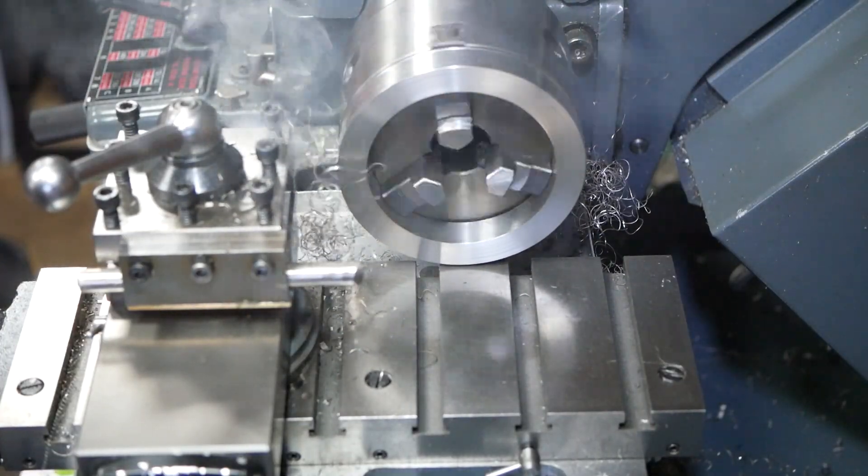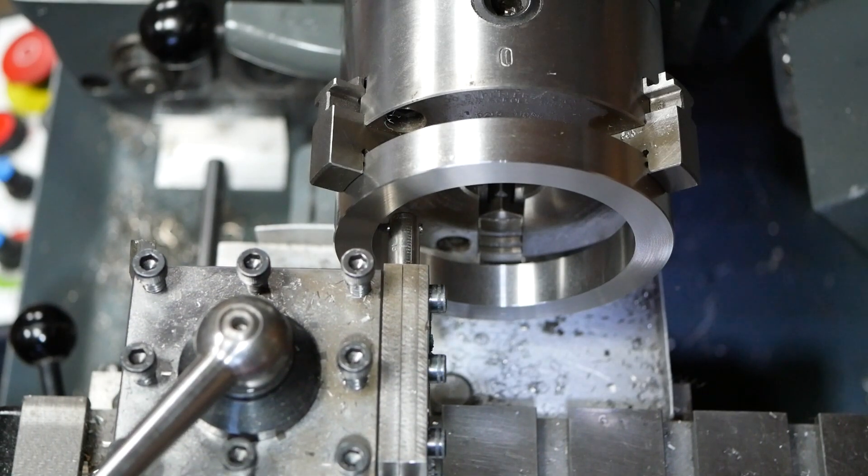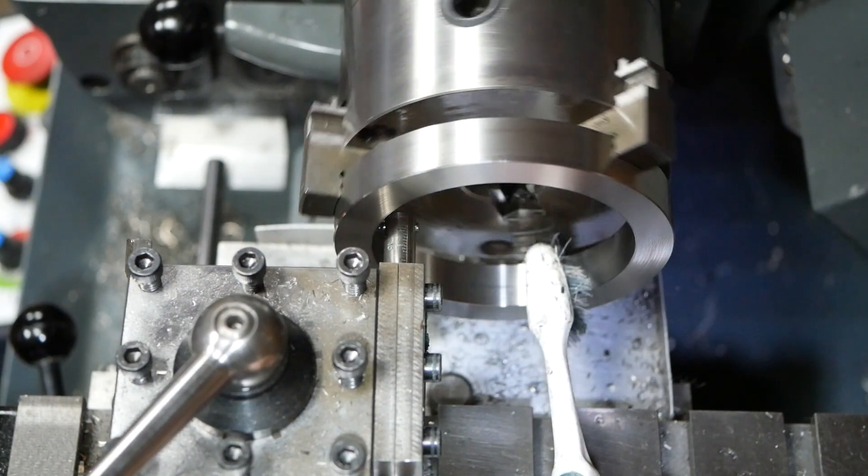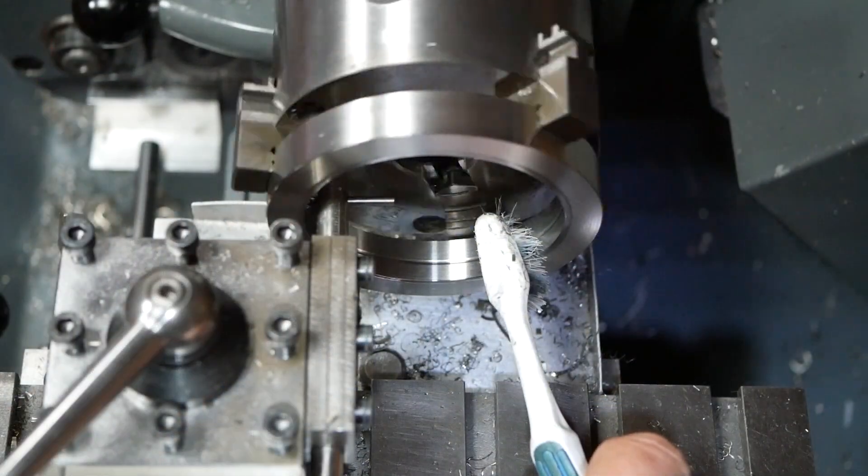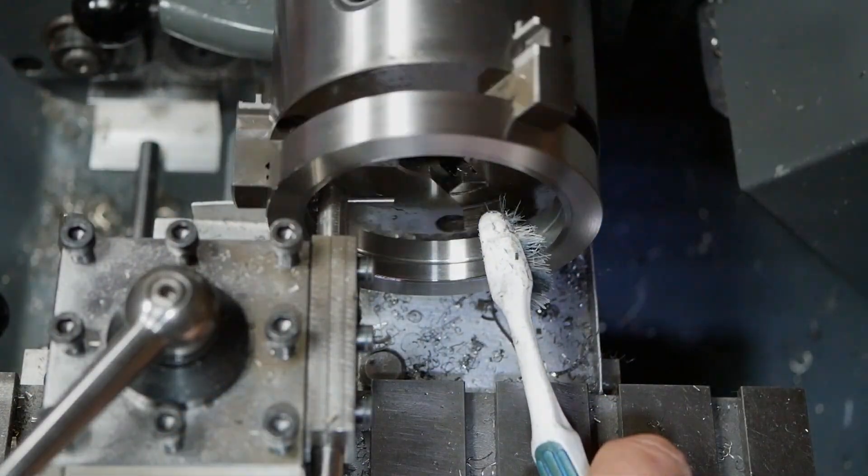The optimal solution is a resettable metric lead screw dial. We start with trepanning a slice of 316 stainless steel to form a ring, which is then bored. The ring will form the dial.